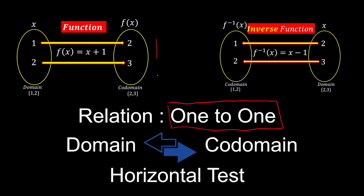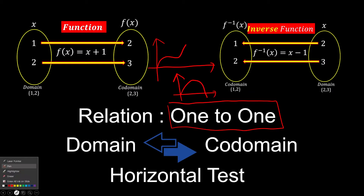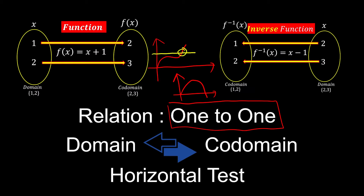The last thing to know is how to check using a graph whether a function has an inverse. We use the horizontal line test. If a horizontal line cuts through the graph at only one point, the function has an inverse. If the line cuts through two points, the function has no inverse. This is the horizontal line test.